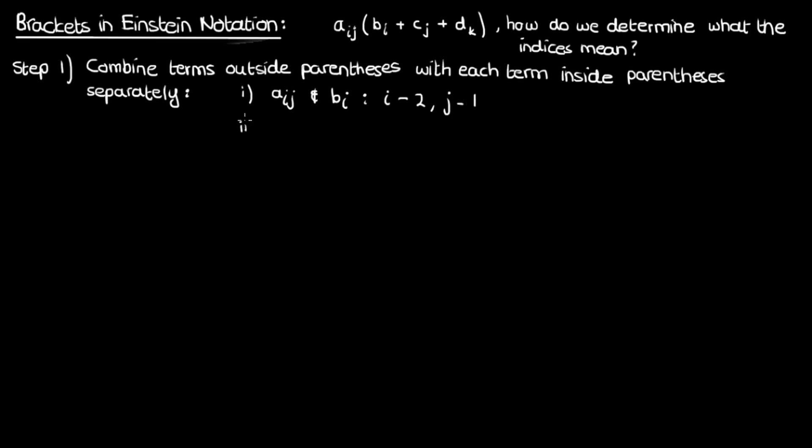Then you do the same thing for aij and cj, where the index i occurs once and the index j occurs twice. Finally, you'd repeat this process for the combination of aij and dk, where i, j, and k each occur once.